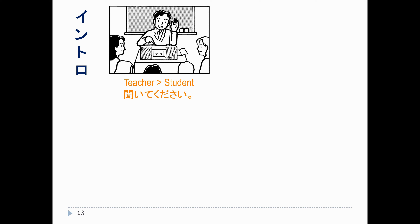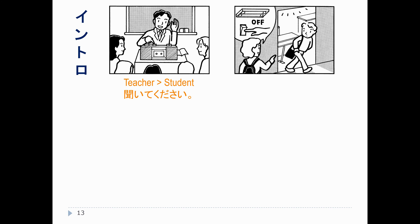We practiced te-form plus kudasai back in 1010 as a way to make polite requests. Te-kudasai is polite, but it is still an order — you are still telling someone 'do this, please.' We're going to talk about in this chapter some slightly more natural ways where we can ask someone who we consider an equal or who might be a social superior to do something for us.